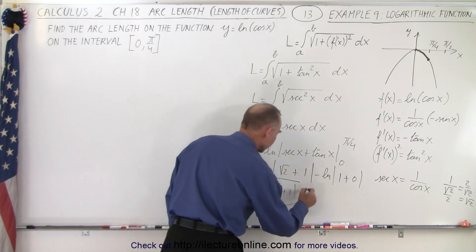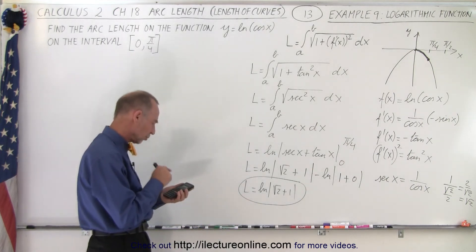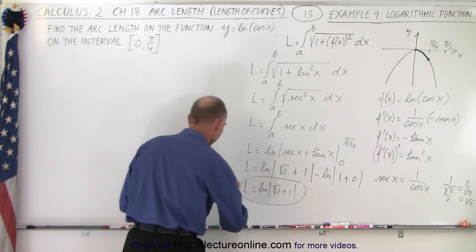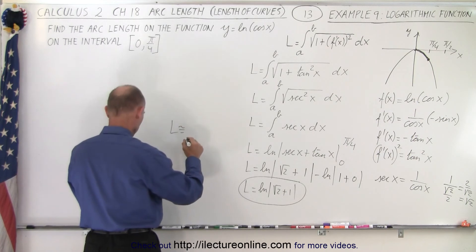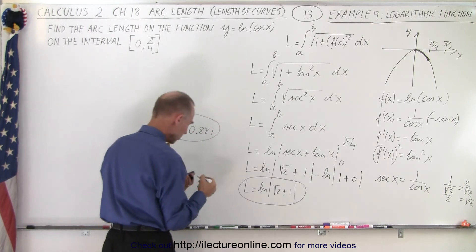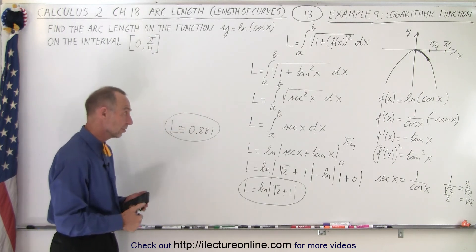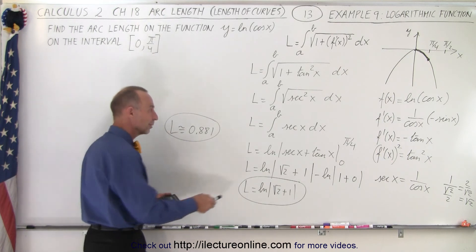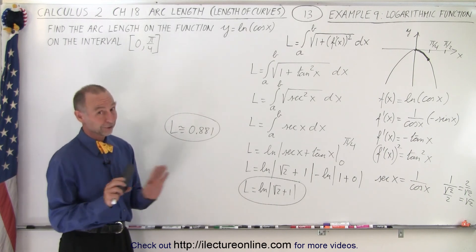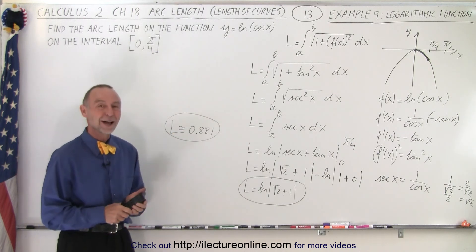So the length equals the natural log of the square root of 2 plus 1, and that is our solution. If you want a numerical value, take the square root of 2 plus 1 and take the natural log of that — L is approximately equal to 0.881. We need to know our trig identities, be able to convert, and remember that the integral of secant is the natural log of the secant of x plus the tangent of x. I had to look that one up before I did the video. That is how it's done.